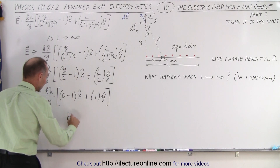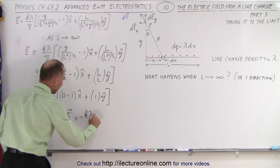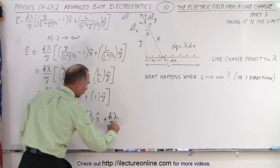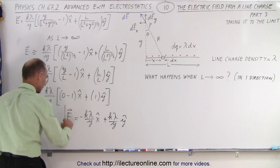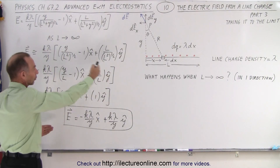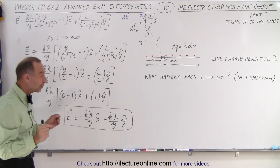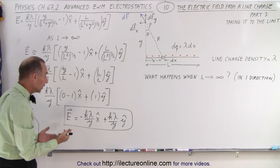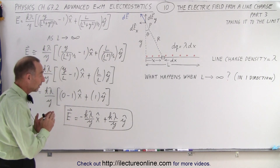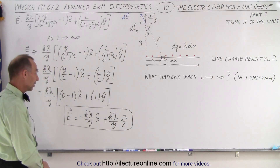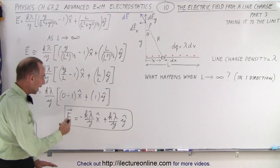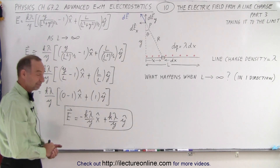And then finally we can write the answer: the electric field is equal to minus K lambda over Y in the X direction, plus K lambda over Y in the Y direction. Notice that is the electric field if we let the line charge become infinitely long in one direction, with nothing on the other direction. Notice that the magnitude of the two components in the X and the Y direction are equal to one another — this is pointing in the negative X direction and that's pointing in the positive Y direction, but the magnitudes of both components are exactly the same. It's an interesting result, and the angle would then be at 45 degrees pointing to the upper left.